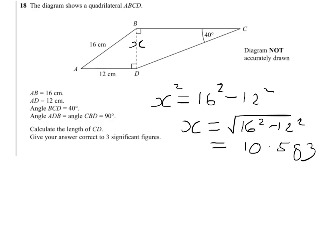If we now put that into the right-angled triangle, we can see that it's the opposite side, 10.583, and we're trying to find the hypotenuse. So we need the sine ratio to do that.